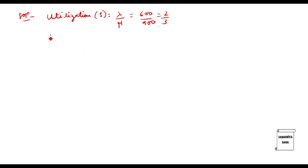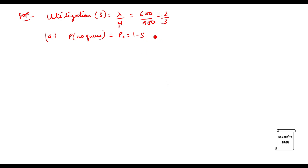Now we calculate P(no queue). P(no queue) equals P0, which is 1 minus rho. Rho indicates utilization — when there is no queue, there is no utilization, so the probability is 1 minus utilization. Substituting: 1 minus 2/3 equals 1/3. So P(no queue) = 1/3.